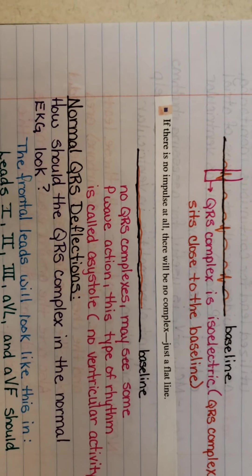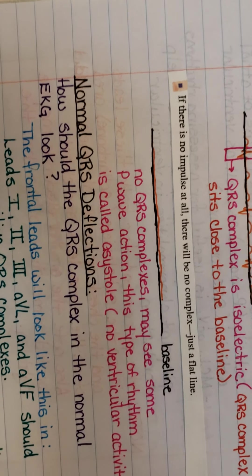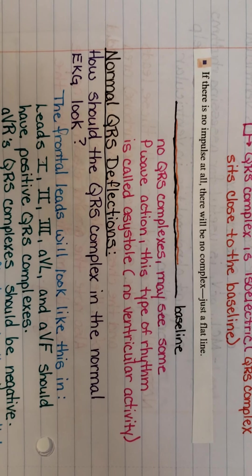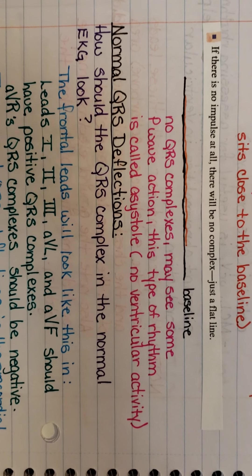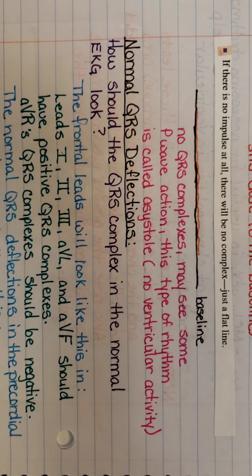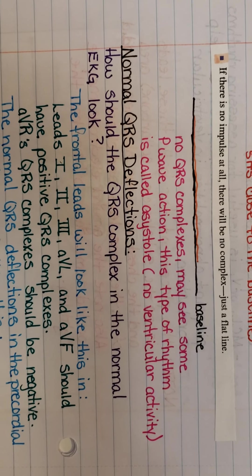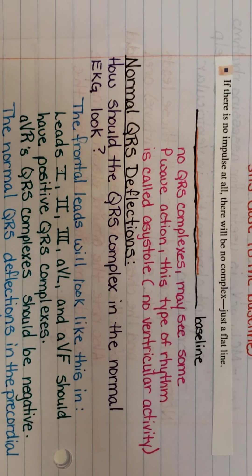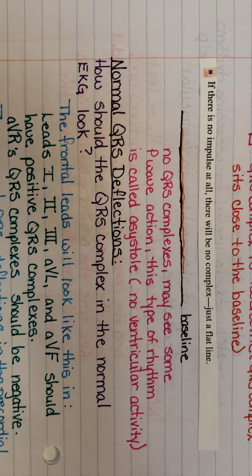And the last truth is if there is no impulse at all, they won't make any complexes because it'll be a flat line. As you can tell, there are no QRS complex, but you may see some P wave activity. This type of rhythm is called asystole where you have no ventricular activity at all. And as we progress into EKG further, you'll understand what asystole basically stands for.